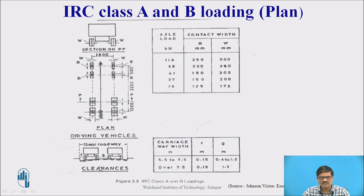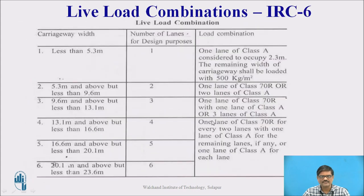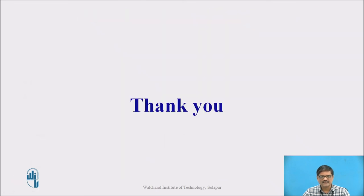In the case of two lanes of vehicles, the minimum clear distance G is taken from the provided table. This is the configuration of class A and class B loading. These are the live load combinations that need to be considered for the analysis. Thank you.